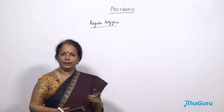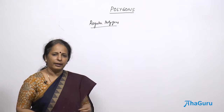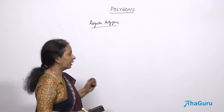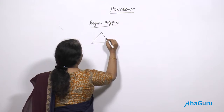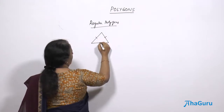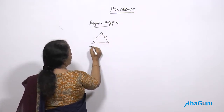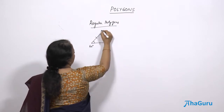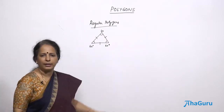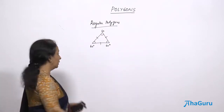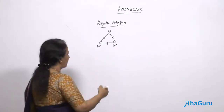A regular triangle — a triangle is a polygon — is an equilateral triangle. What is so special about equilateral triangle? All the three sides are equal and all the three angles are also equal, each being 60 degrees. So this is an equilateral triangle. This is a special polygon of a triangle.